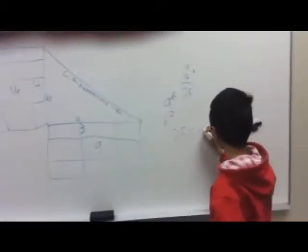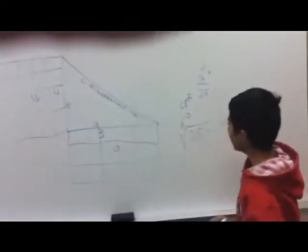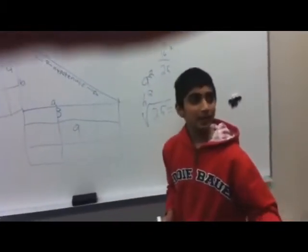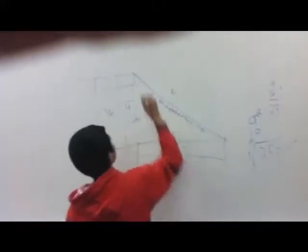Twenty-five equals c squared. Now, how you get rid of the square is the square root of it. What's the square root of twenty-five? Four. Exactly! Five! So now you've got five.